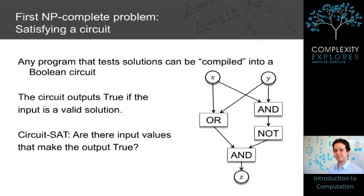The first NP-complete problem, or the simplest to see that it's NP-complete, is based on Boolean circuits. Because any program that tests solutions can be compiled into a Boolean circuit. And remember, having a program that tests solutions is the definition of NP.